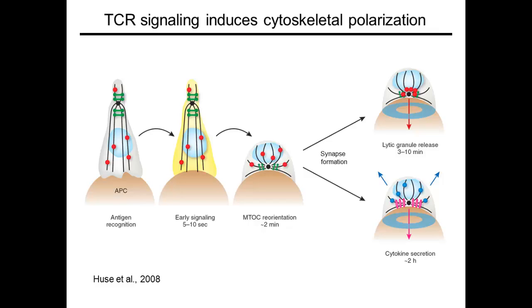My name is Morgan Hughes. I'm from Sloan Kettering Cancer Center in New York, and I'm going to be telling you a little bit about the molecular pathways controlling cell polarity of the immunological synapse.